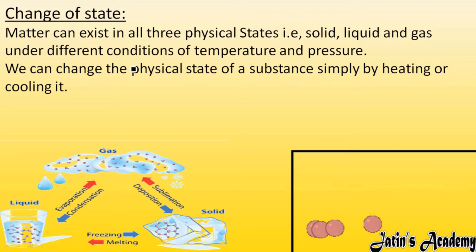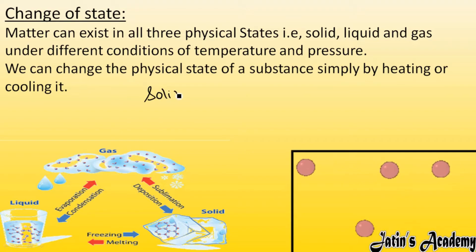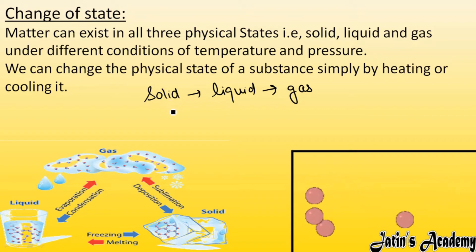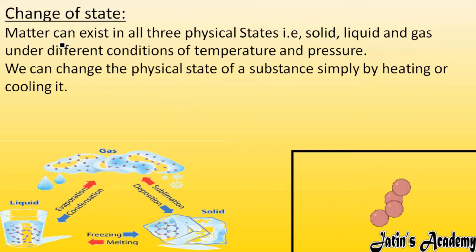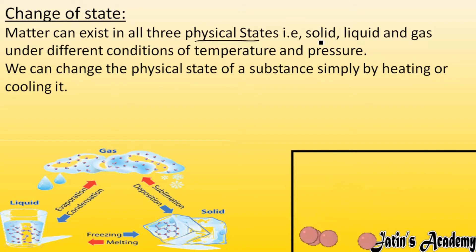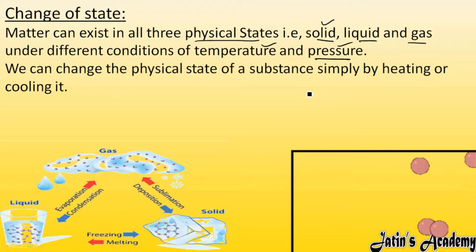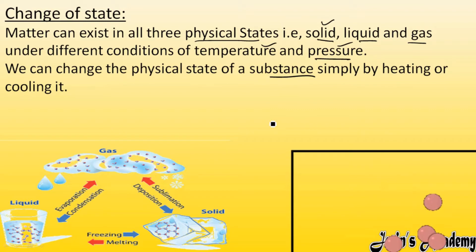Next topic: change of state. We can change the state of matter — solid can convert into liquid, liquid can convert into gas, or the reverse. Matter can exist in all three physical states — solid, liquid, and gas — under different conditions of temperature and pressure. The arrangement of particles differs in each state.